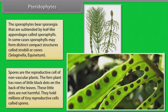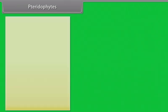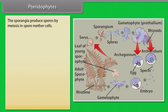Spores are reproductive cells of non-vascular plants. The fern plant has rows of little black dots on the back of the leaves. These little dots are not harmful. They hold millions of tiny reproductive cells called spores. The sporangia produce spores by meiosis in spore mother cells.